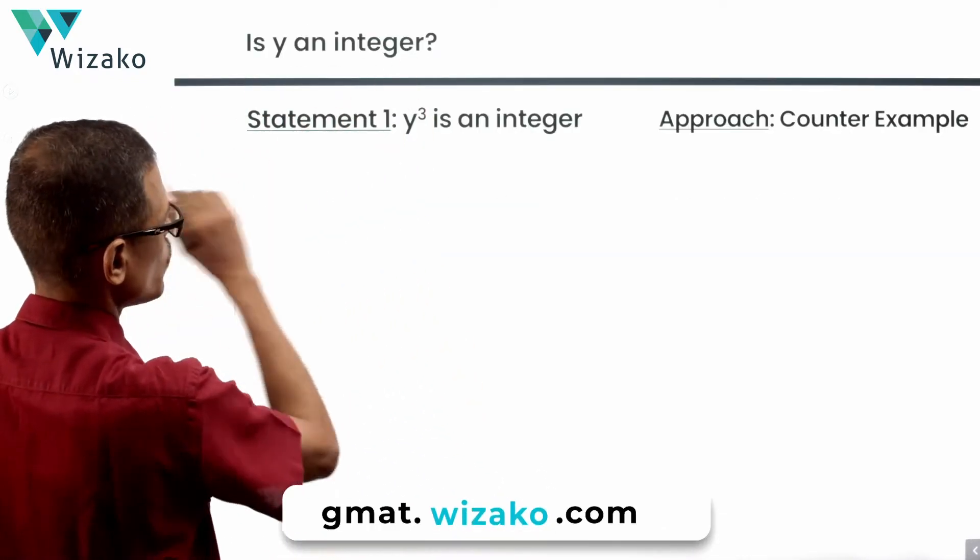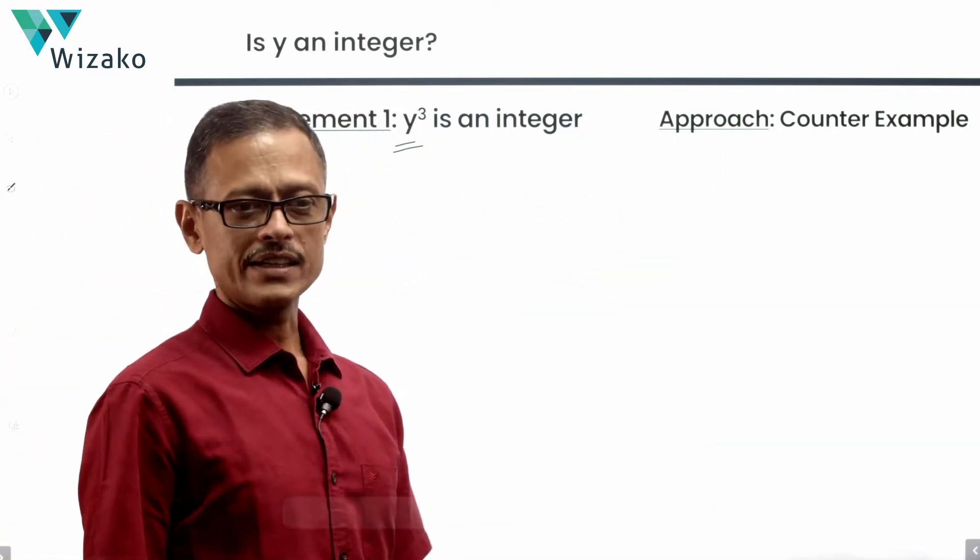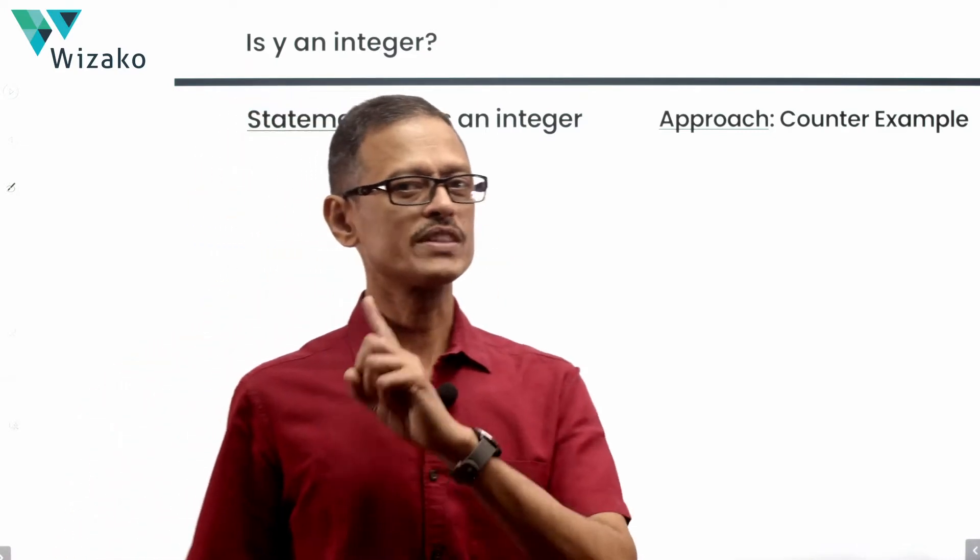Is y an integer the question? It says y cube is an integer. The approach that we are going to take is a counter-example. What is known is that y cube is an integer.